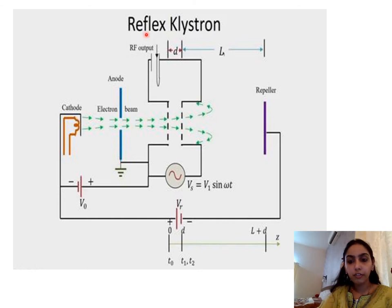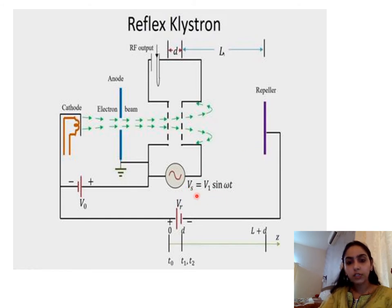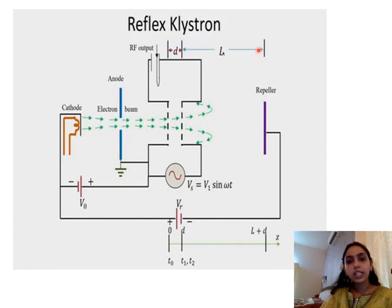Looking at the figure for the reflex klystron: unlike the two cavity klystron, here we have a single reentrant cavity, with a cathode, anode, and a high DC voltage V0. Another difference is a repeller voltage Vr is provided. The input microwave voltage Vs equals V1 sin(ωt) and the RF output is collected from this same cavity. D is the distance of the cavity grids, t0 is the time taken for electrons to arrive at the cavity, t1 is the time for electrons to leave the cavity, and t2 is the time for electrons to return to the cavity. L denotes the drift space from outside the cavity to the repeller.